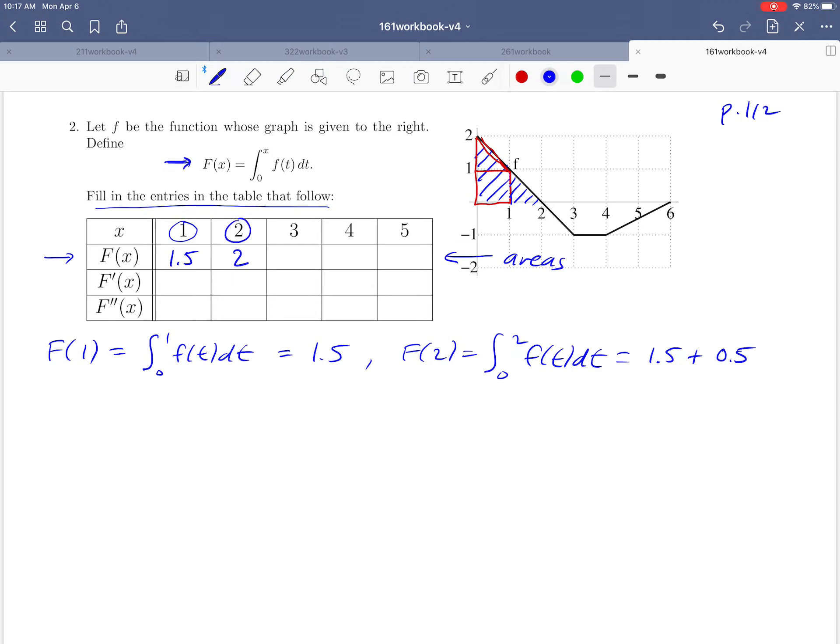Moving on to x equals 3, we add the triangle below the x-axis. Since it's below the axis, we subtract 0.5 from the 2 we already had, bringing us back to 1.5 for F(3).